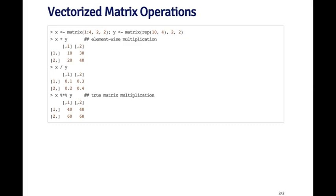If I just do x times y, this is not a matrix multiplication. This is an element-wise multiplication. The one-one element of x is multiplied by the one-one element of y, and the two-two element is multiplying the two-two element of the other matrix. Each element is multiplied together in parallel. Same when you do division. This is not a matrix inverse or something like that. This is just dividing one matrix literally element by element by another.